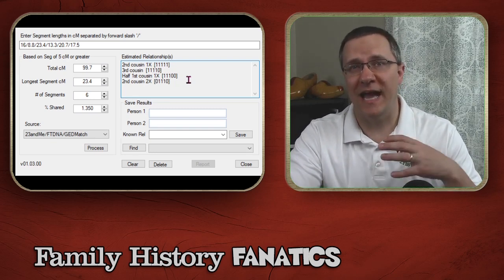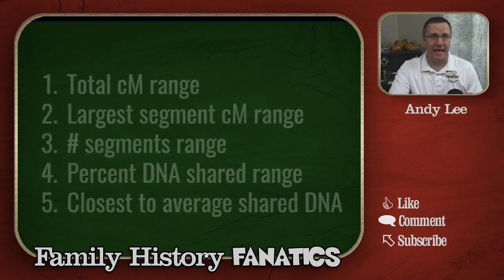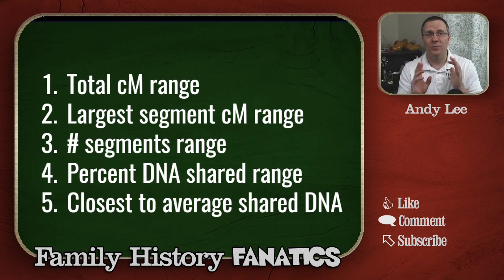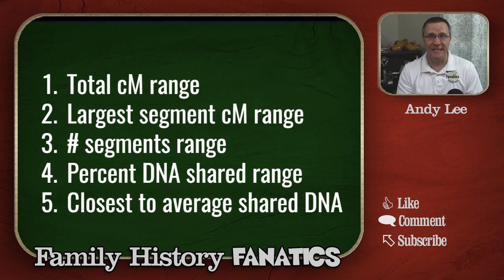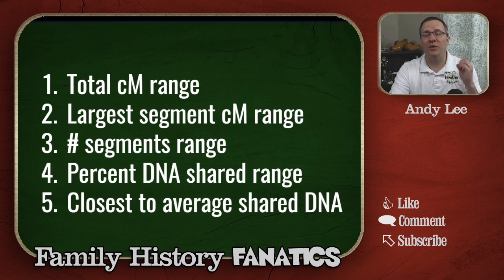This is a way of categorizing how likely that match is. The relationship estimator is looking at the total centimorgan range, the largest segment centimorgan range, the number of segments in that range, the percent of DNA shared range, and the closest to average of shared DNA. This data has been gathered from lots of different matches, and each one of these ones or zeros corresponds to those criteria. So the very first one means it is within the total centimorgan range, the second one means it is within the largest segment centimorgan range, and so on.